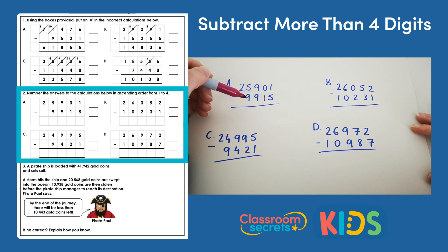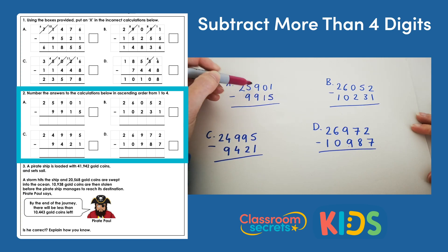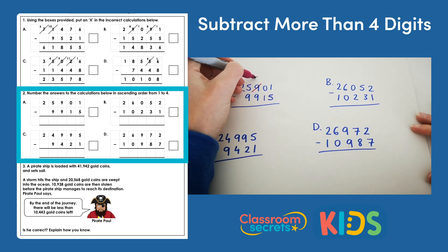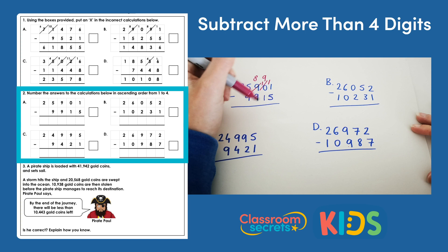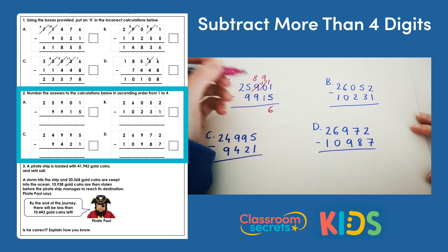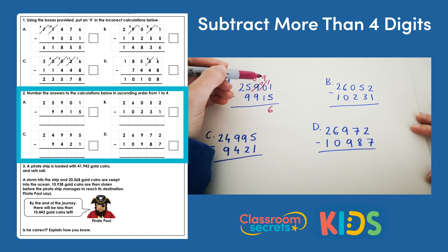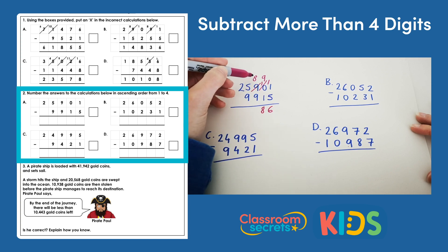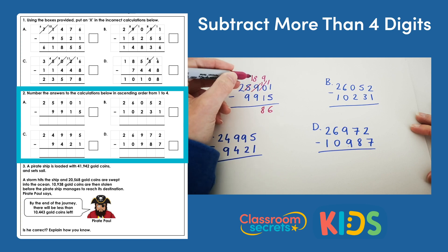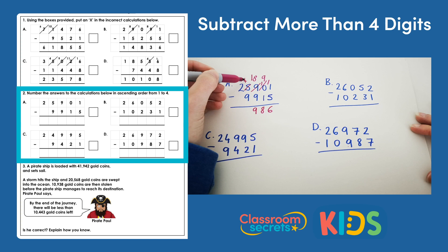For calculation a: 1 subtract 5 — we can't do, but we also can't exchange from the tens column, so we need to exchange from the hundreds column, then from the tens column, and then do 11 subtract 5, which is 6. Then we can do 9 take away 1, which is 8. We can't do 8 take away 9, so we need to do an exchange, and then 18 subtract 9 is 9.